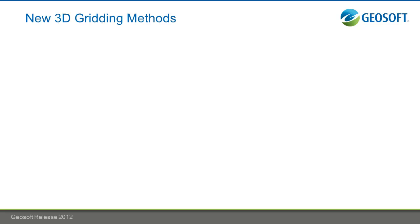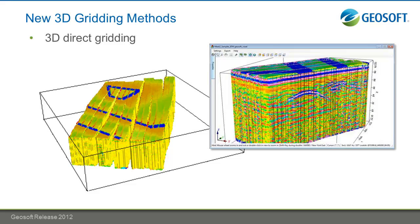As we work more in a 3D environment, we've been adding some 3D gridding methods. Last year, Kriging was available as a 3D gridding method. However, it can be quite time-consuming and can take up a lot of time if you've got a larger area. This year, we've added direct gridding and inverse distance weighted gridding for your 3D data sets.